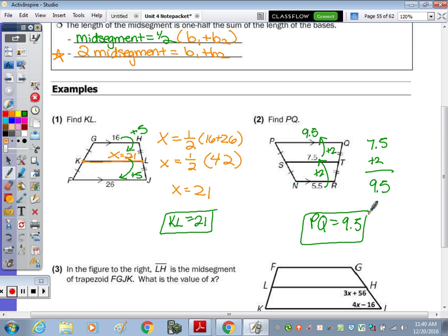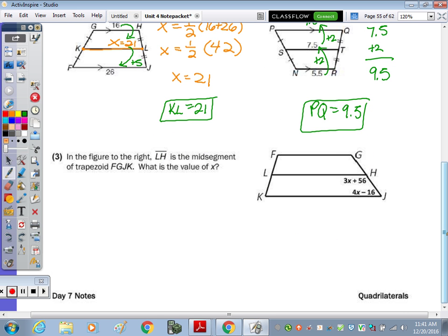Number 3, it says in the figure to the right, LH is a midsegment of the trapezoid. What's the value of X? That's not giving us the length of any of the bases in the midsegment. This is giving us angles. So what do we know, or what do we use to find the angles? We're going to use the fact that these are parallel. Our parallel line cheat sheet. The angles are between the parallel lines, so we look at these two parallel lines on the same side of the transversal. What's true about X and O? Are they congruent or supplementary? Supplementary.